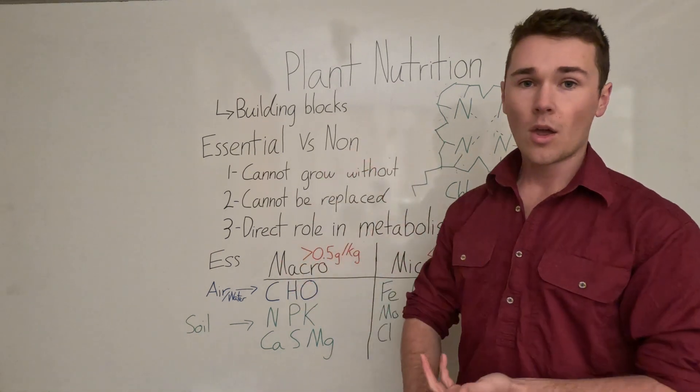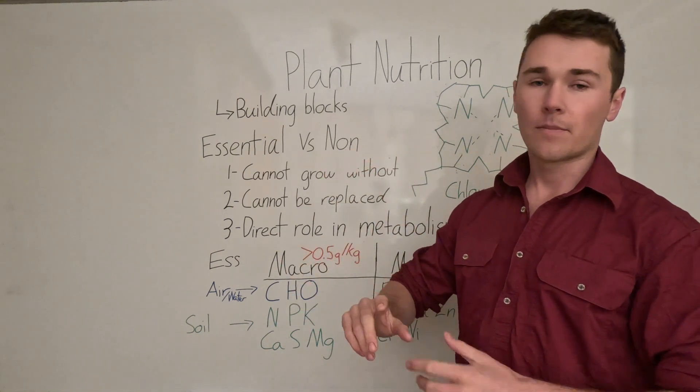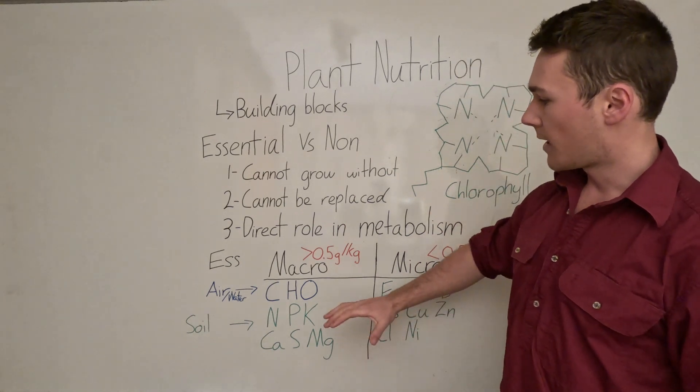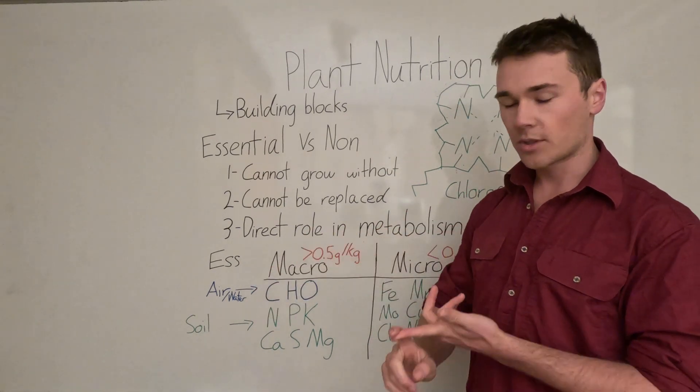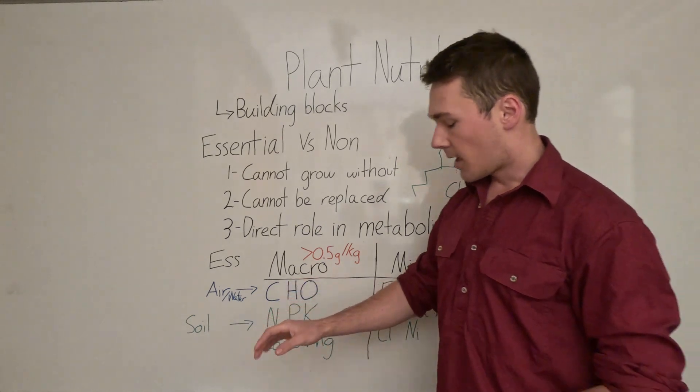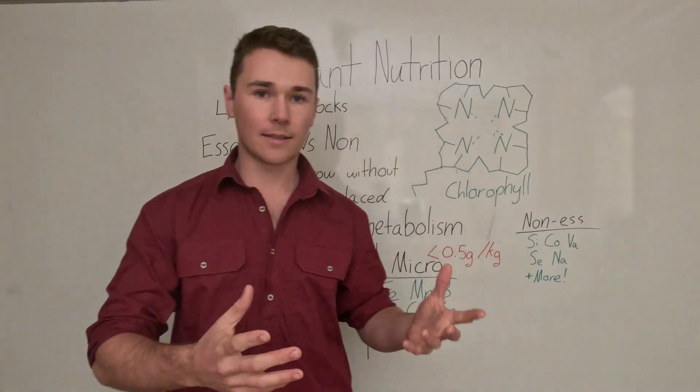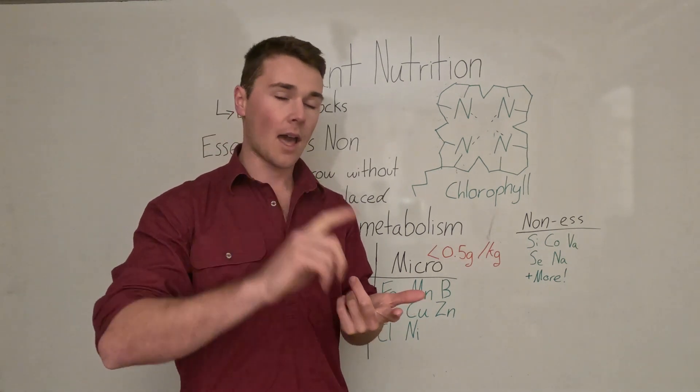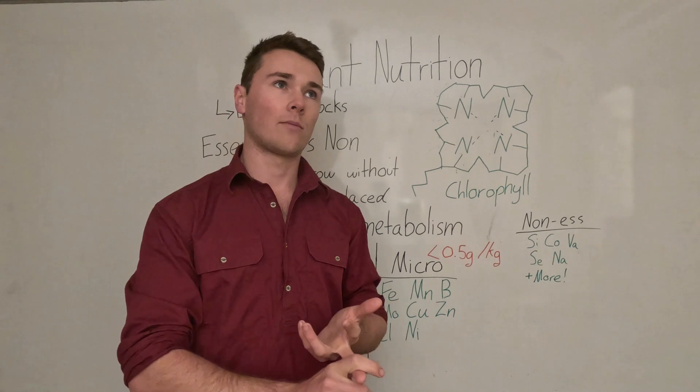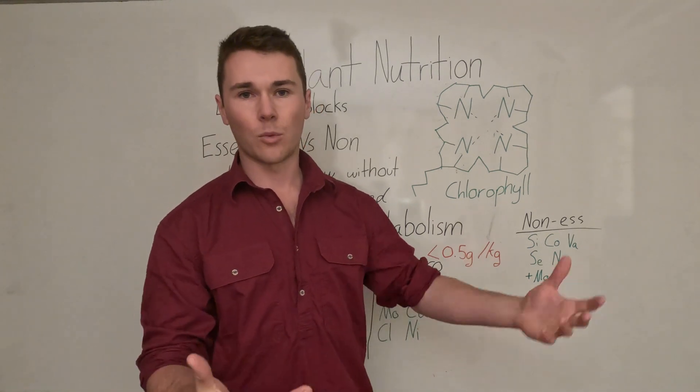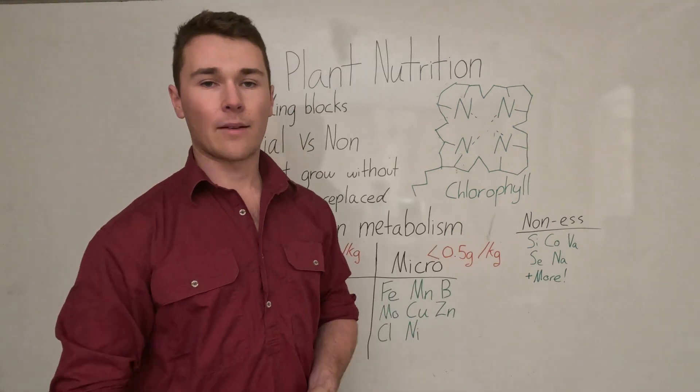We have two ways that we can get plant nutrients. We can either get them through the air and water, and then we can also get them through the soil. When we look at the air, the two main things that plants get from the air are carbon dioxide which is what we breathe out, and we get water from water, and then effectively we get everything else from the soil.